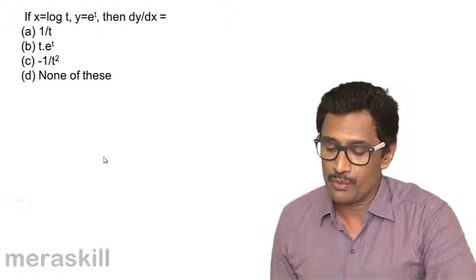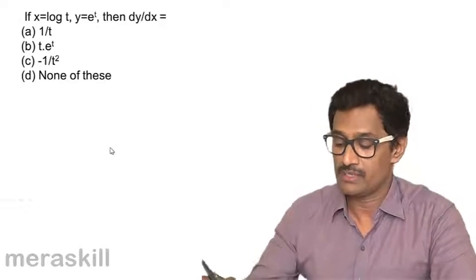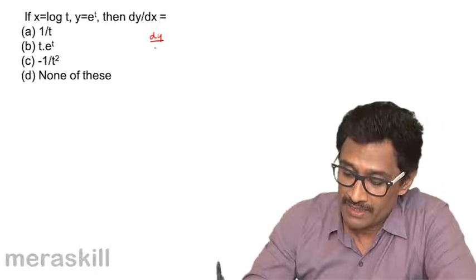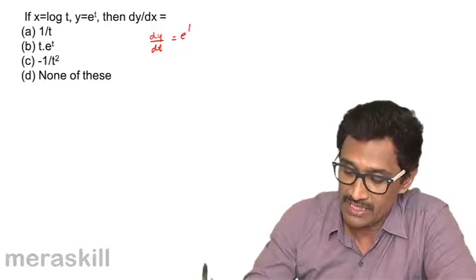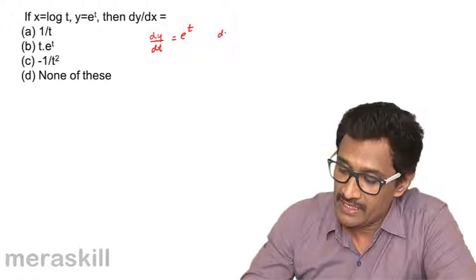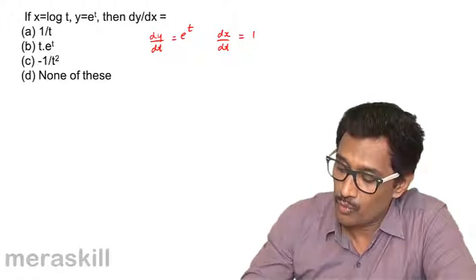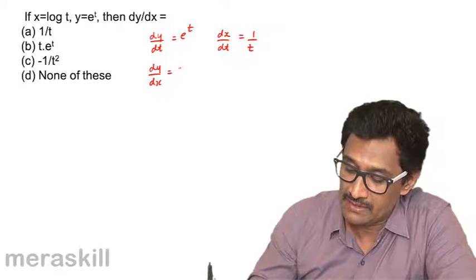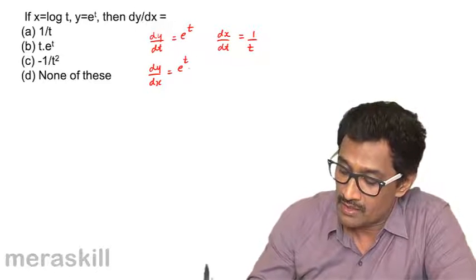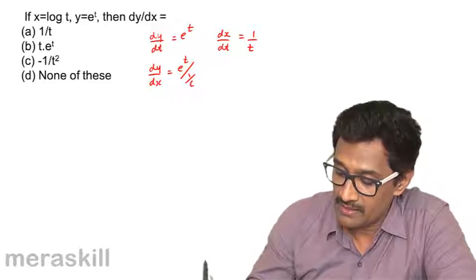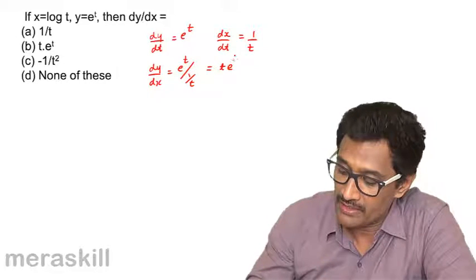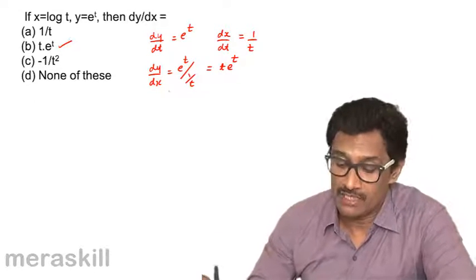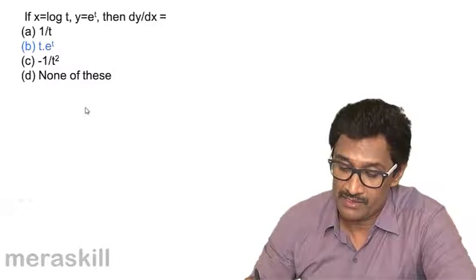Now x = log t and y = eᵗ. What is dy/dx? We find dy/dt = eᵗ, and dx/dt = 1/t. So dy/dx = eᵗ divided by (1/t), which is nothing but t·eᵗ. So the answer is t·eᵗ.